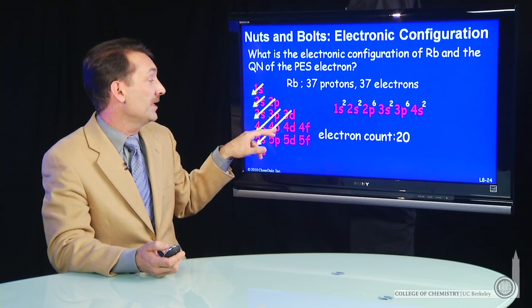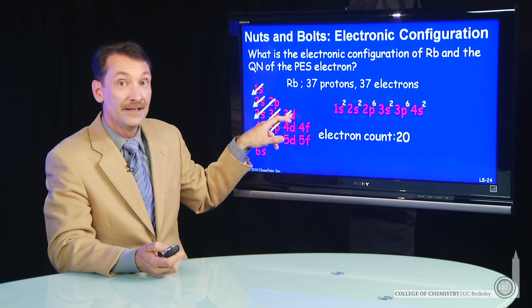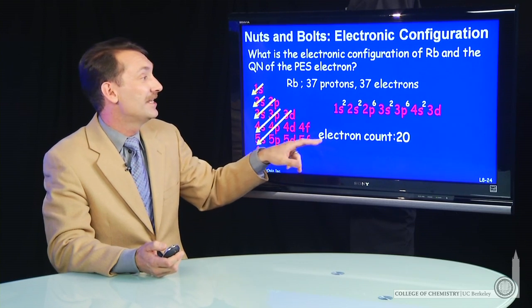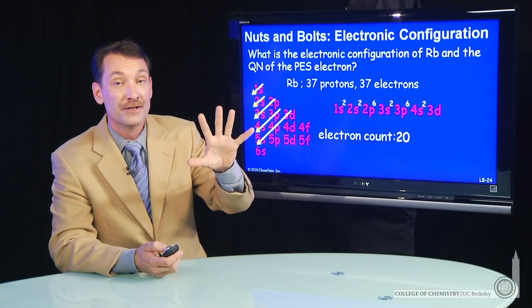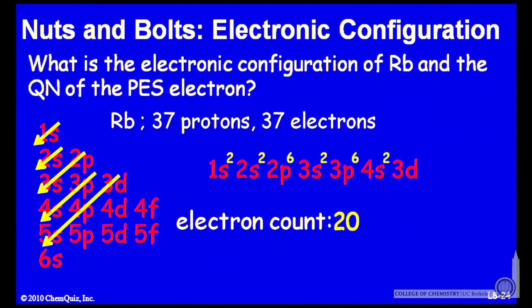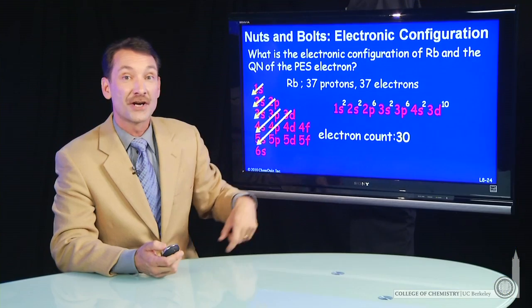Now, rather than fill the 4p, we're going to fill the 3d next. The 3d fills - d orbitals have five equivalent orbitals, two electrons each, 10 possible electrons in the 3d. This brings our count to 30.